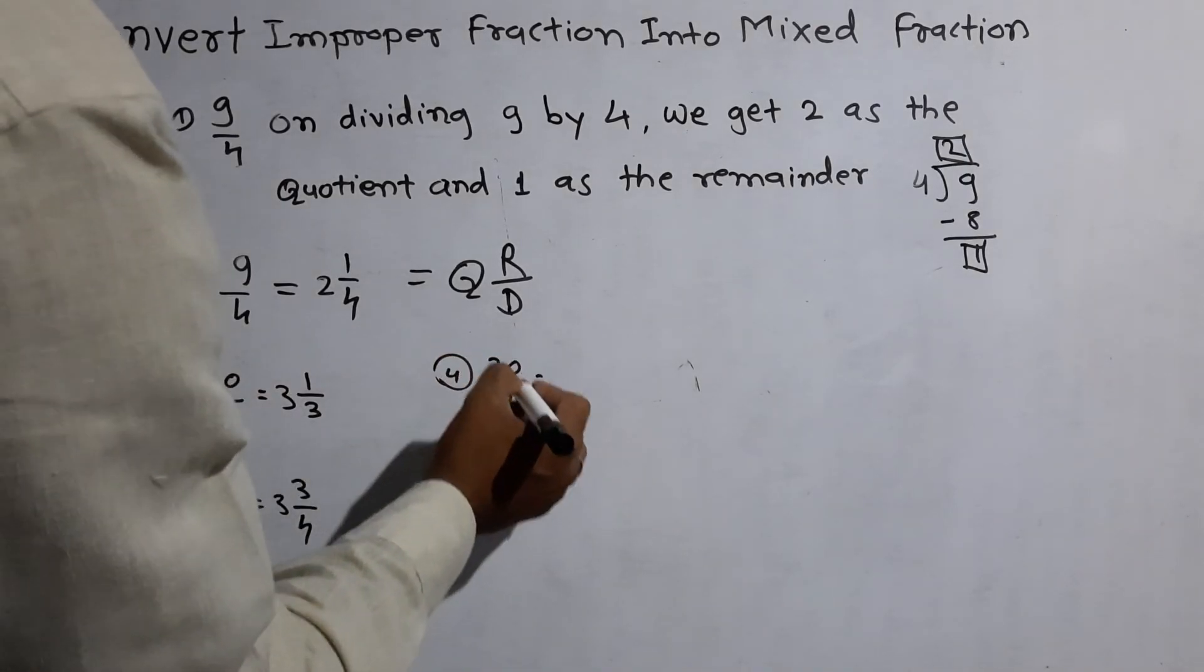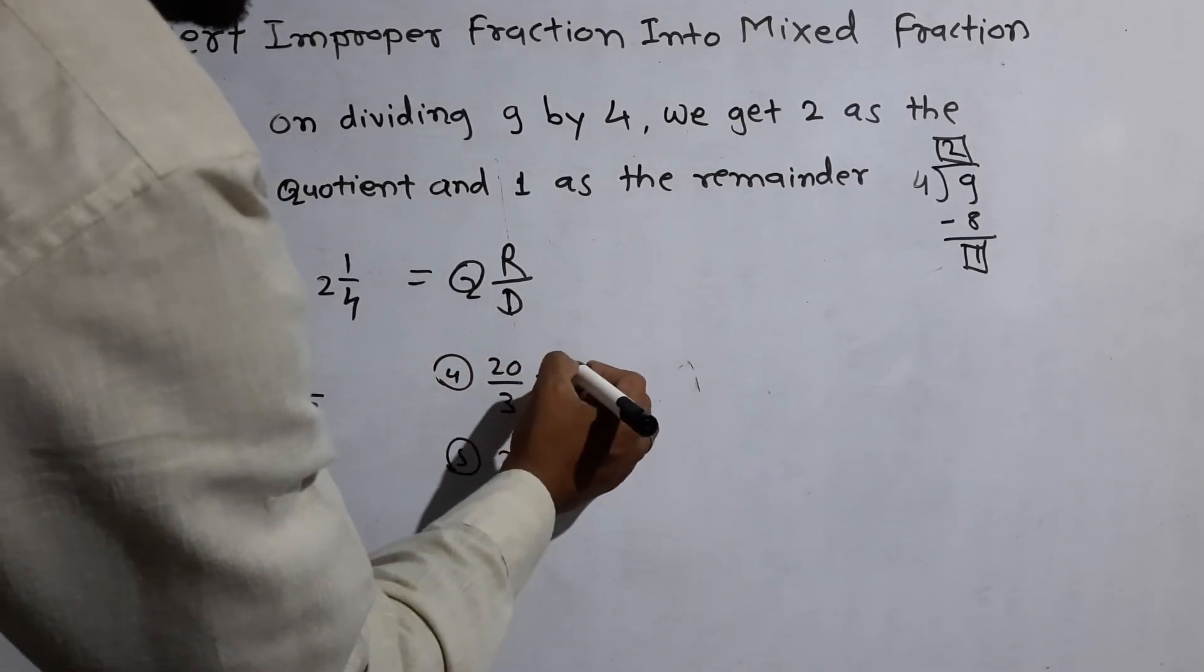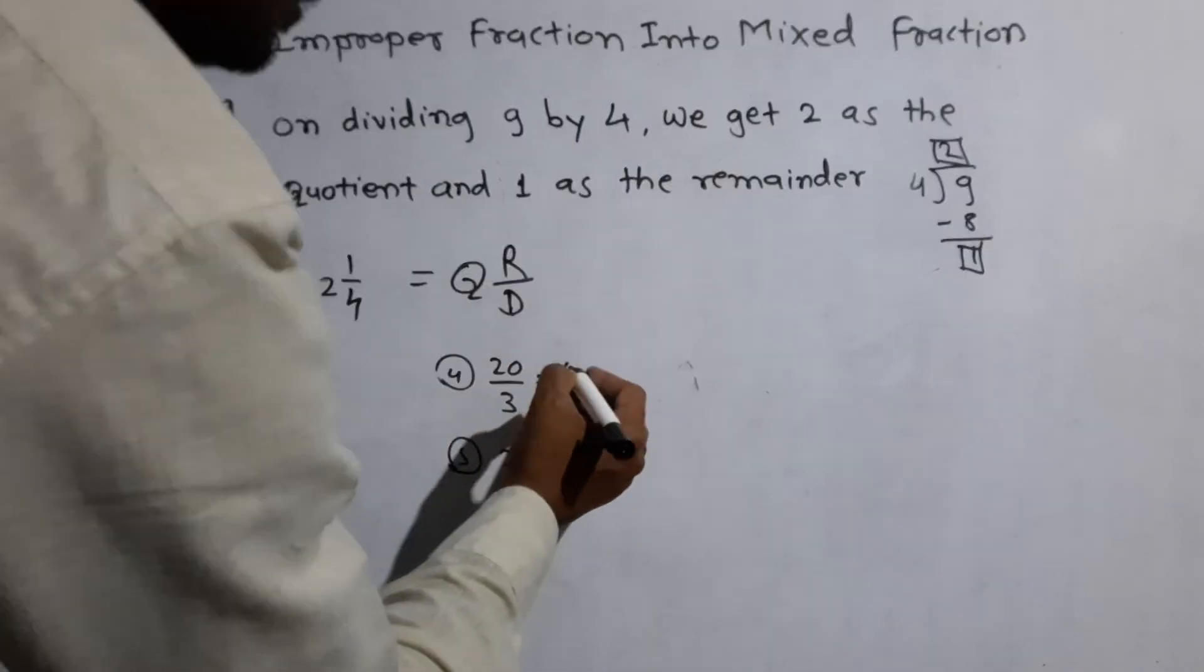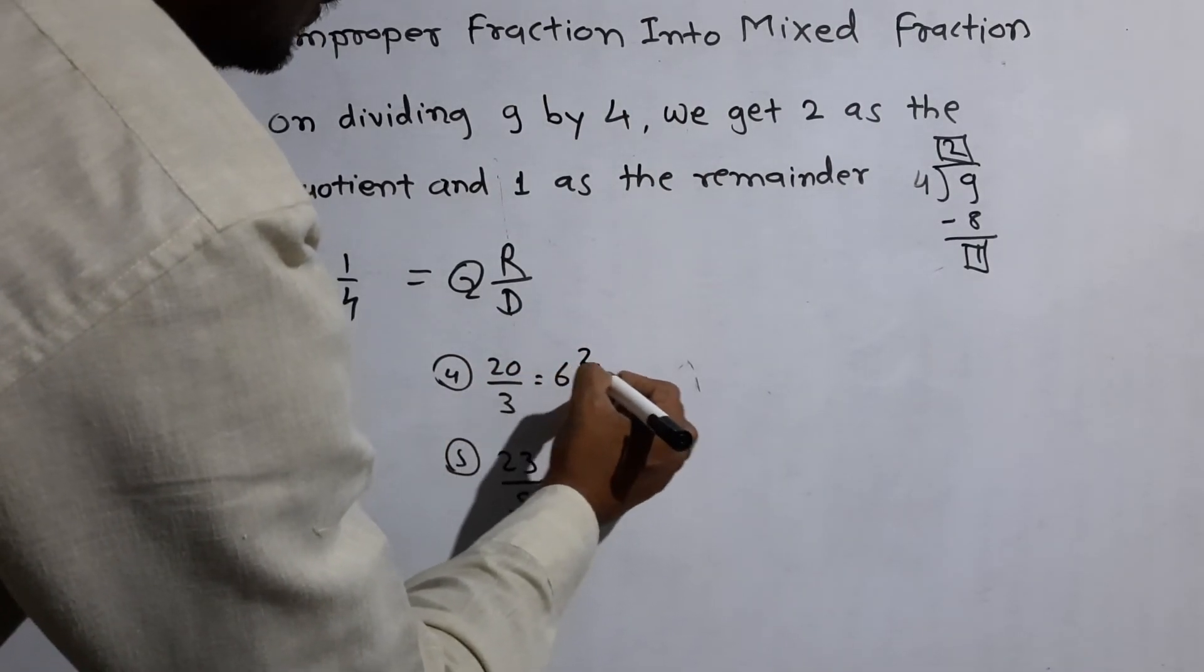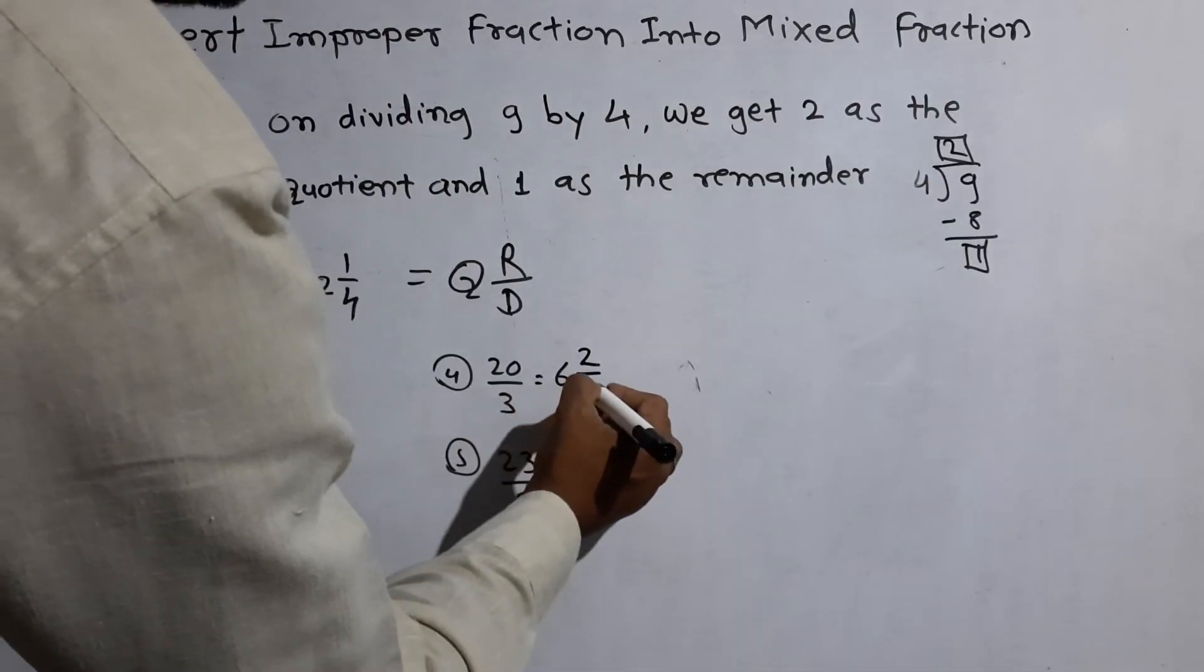Fourth one: 20 by 3. 3 sixes are 18. Remainder 2. Denominator 3.